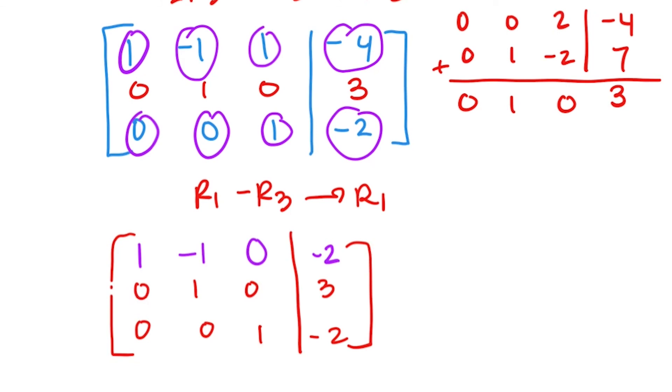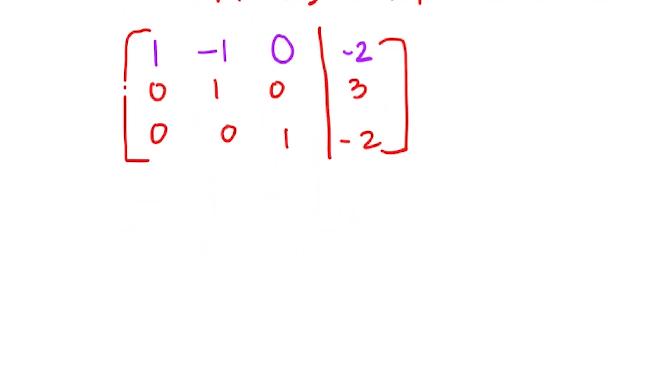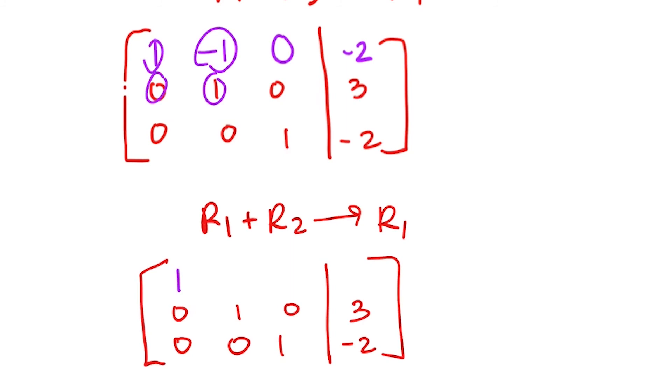Okay, our last position, we need this number to be a 0. And this time we're going to use row 2 to help us because row 3 has a 0 there. I won't be able to do anything. Since these are already opposite sign, what if I just add those two rows together? We will do row 1 plus row 2 to change row 1. So second row is the same. Third row is the same. And then we have 1 plus 0 is 1. Negative 1 plus 1 is 0. 0 plus 0 is 0. And -2 plus 3 is 1.